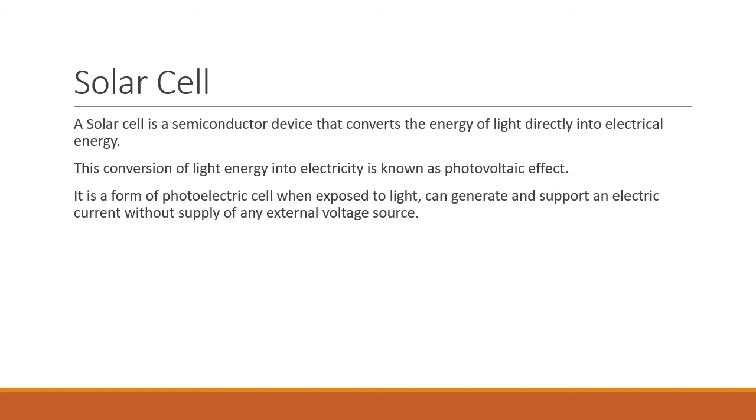That is why it is also called as photoelectric cell because when it is exposed to light, it can generate or support any electric current and for this purpose, it does not require any external voltage source. This is the basic difference between solar cell and photo diode because photo diode performs the same operation but it requires the reverse biasing of the external voltage but in case of solar cell, it performs a photovoltaic effect without supply of any external voltage source.